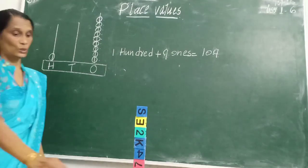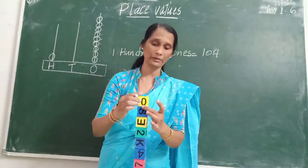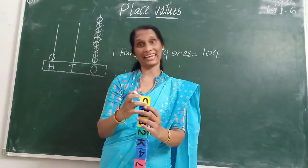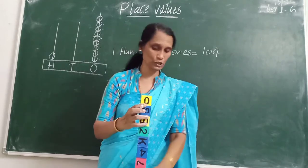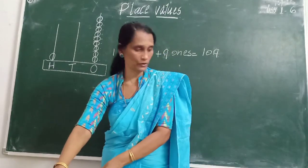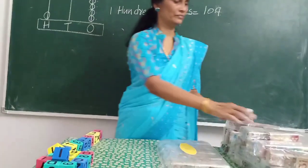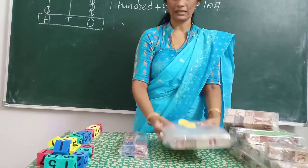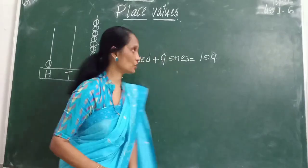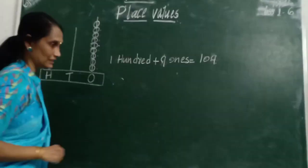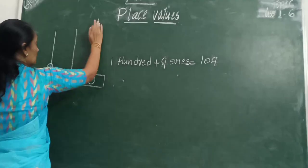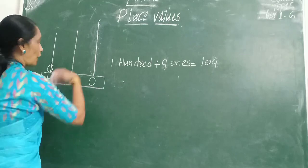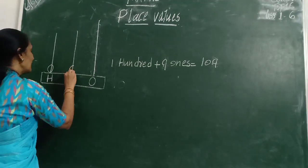100 plus 9 ones. So it will become 109. Okay, I want to show 1 more — that means 10 ones. So when it is coming 10, what we used to do? We will show this 10 with the help of a single block. So, 100 plus 1 ten. What is 100 plus 1 ten? That is 110.